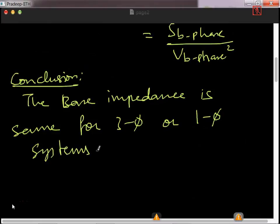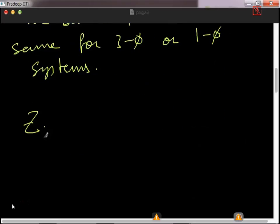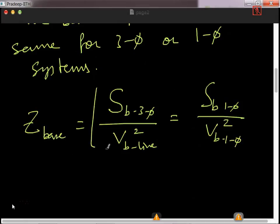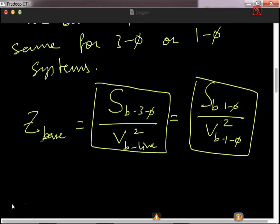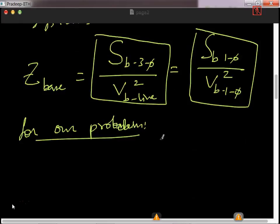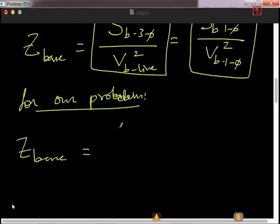The only condition is: in the numerator, if you use three-phase power S_base_3phase, then in the denominator you must use V_base_line. Or you can use S_base_1phase and V_base_1phase. Either way — using all three-phase quantities or all one-phase quantities — the base impedance will be the same. For our problem, Z_base = 200 kVA / (66 kV)².